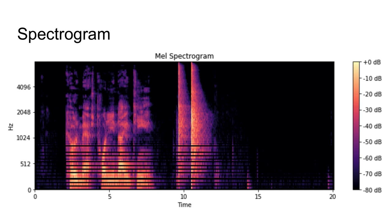We can then convert raw audio data into a spectrogram. A spectrogram is created by taking digital data, breaking it up into overlapping windows across time, and doing a Fourier transform over each window to calculate the magnitude and frequency. Time is on the x-axis, frequency is on the y-axis, and amplitude is displayed as a heat map from 0 dB down to -80 dB. This is sometimes called a mel spectrogram because it's based on mel frequencies — the name 'mel' comes from the word 'melody', indicating the scale is based on pitch comparisons.